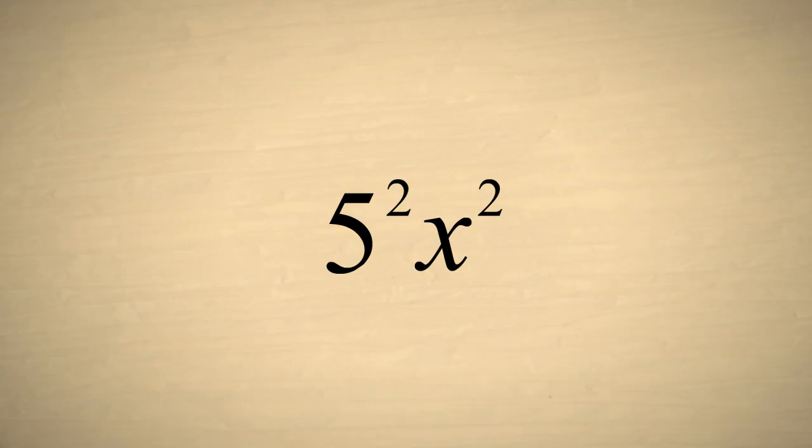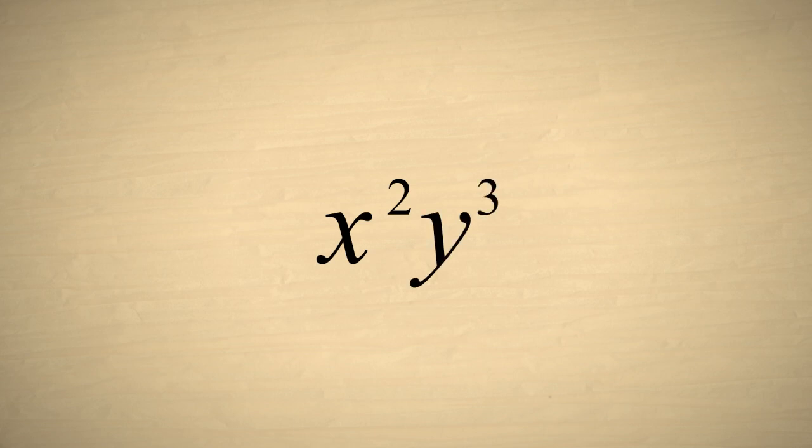When different variables are used in an expression it is assumed that they can each have different values. For example, x squared times y cubed cannot be combined by adding their exponents since x and y may represent different bases.